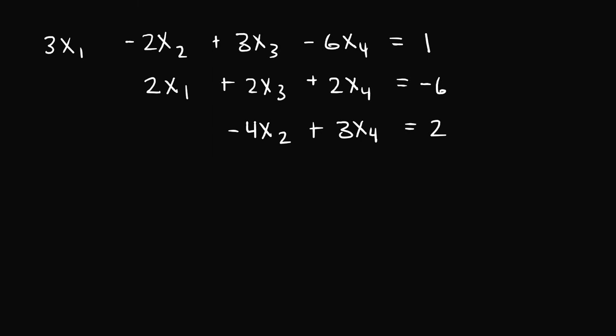In this example, we have a system of linear equations written out, and we want to figure out what the augmented matrix is for this system. An augmented matrix includes all of the coefficients on the left-hand side for each one of these equations, as well as all of the constant terms on the right-hand side, unlike the coefficient matrix, which only includes the left-hand side. So in this augmented matrix, we're going to include numbers from both the left-hand side and the right-hand side.